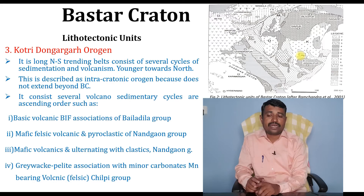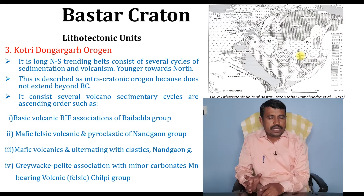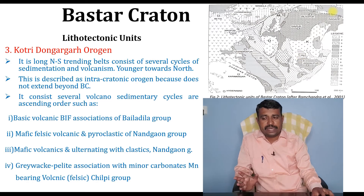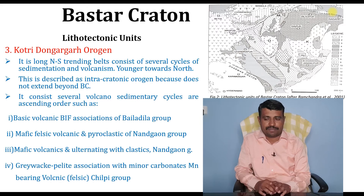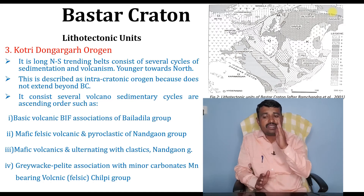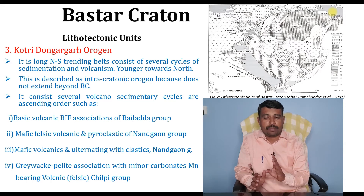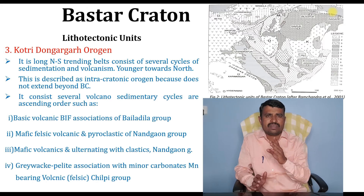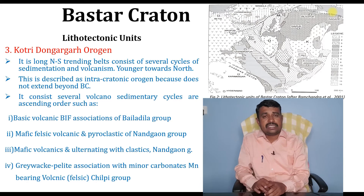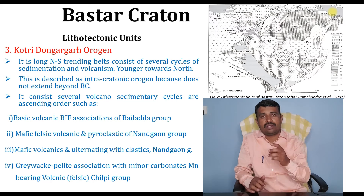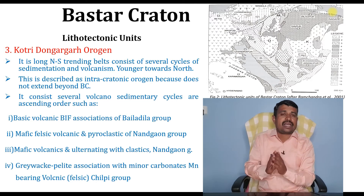The third lithotectonic unit in the Bastar Craton is the Kotri-Dongargarh Orogen. This is a long north-south trending belt consisting of several cycles of sedimentation and volcanism, with younger rocks towards the northern side. It is described as an intracratonic orogen because it does not extend beyond the Bastar Craton.